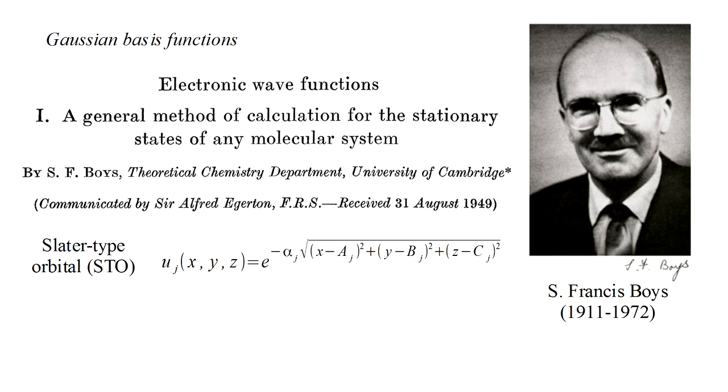So-called Slater-type orbitals, such as we find in the hydrogen atom, are characterized by an exponential decrease with distance from the nucleus. That distance is given by the square root of this expression. These have the form e to the minus alpha r, where alpha is some constant, and r is the distance of the electron from the nucleus. It's the square root that creates the mathematical difficulties.